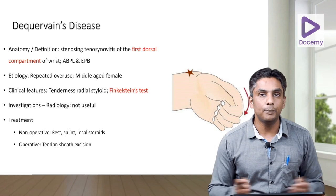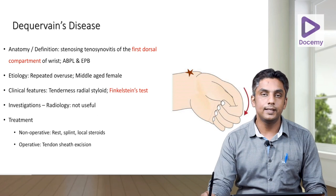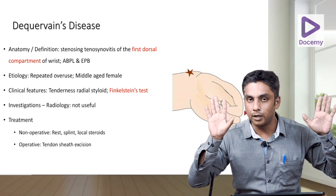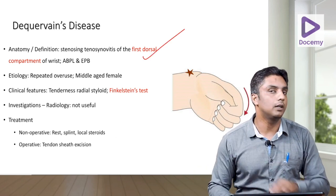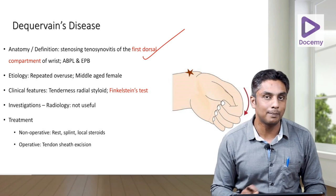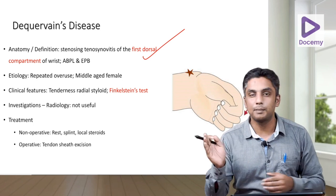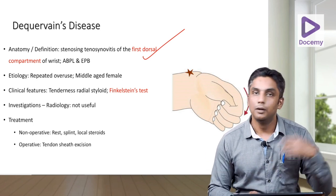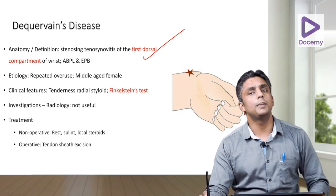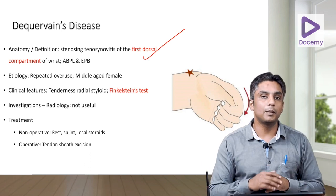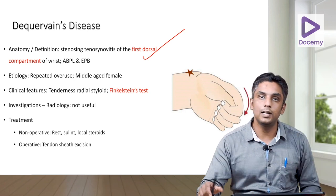De Quervain's disease — another very important topic. The buzzword is the first extensor compartment. It is stenosing of the first dorsal compartment. There are six extensor compartments: (1) APL and EPB; (2) ECRB and ECRL; (3) EPL; (4) extensor digitorum to fingers; (5) extensor digiti minimi; (6) extensor carpi ulnaris. De Quervain's disease is stenosing of the first dorsal compartment containing the abductor pollicis longus (APL) and extensor pollicis brevis (EPB).